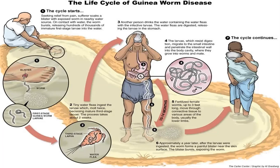That is approximately one meter long. They move through the connective tissues to various parts of the body, usually the lower limb, because whenever a person enters into a water body, that will be the first part to come in contact with the water. This process of ingestion to the stage of transmission to the next person has a window period of around 10 to 12 months.